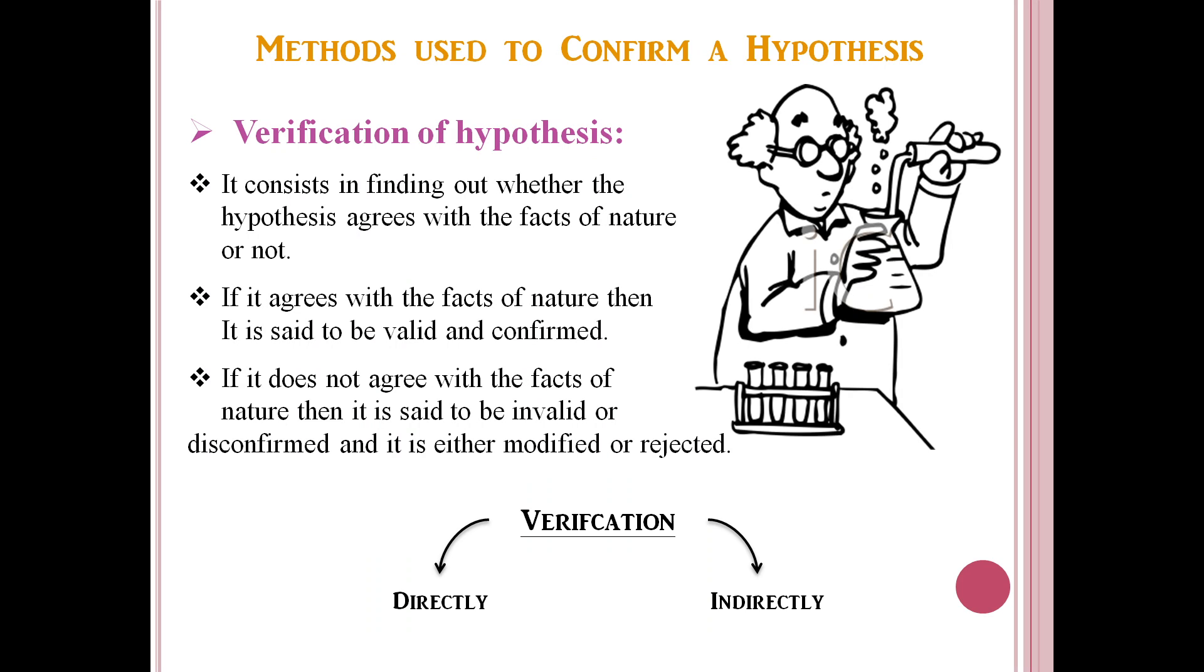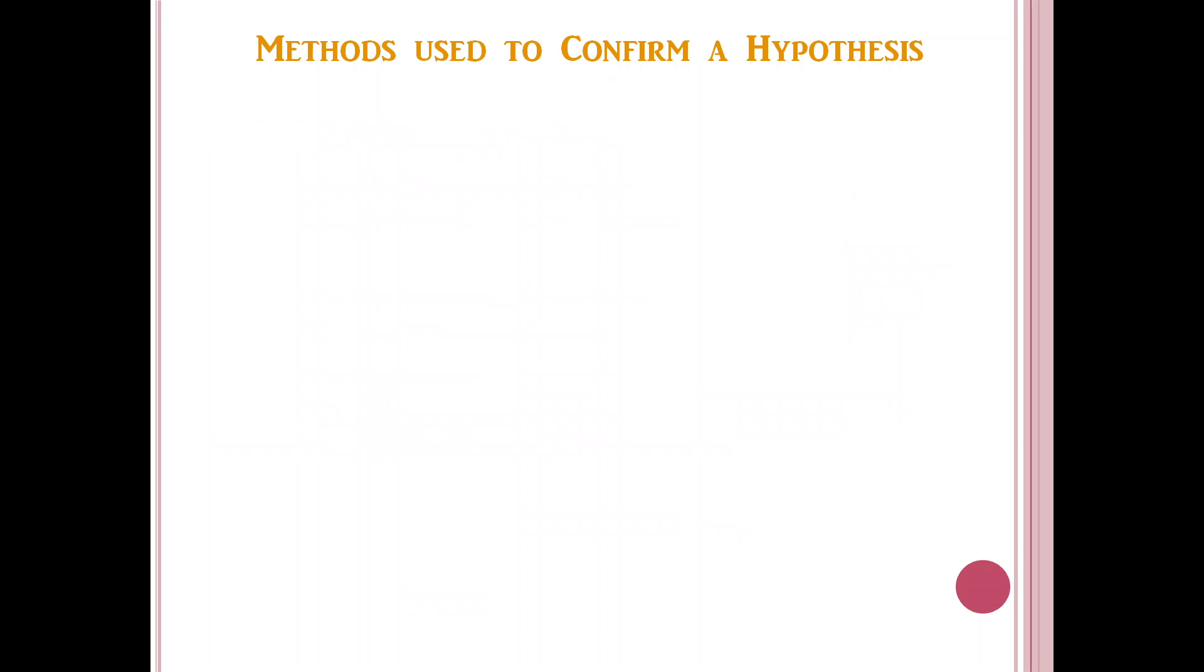Verification can be done either directly or indirectly. Let us see direct verification. Hypothesis that is verified directly is called empirical or instantial hypothesis. It consists in observing.